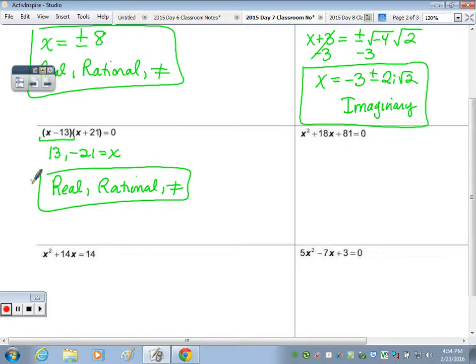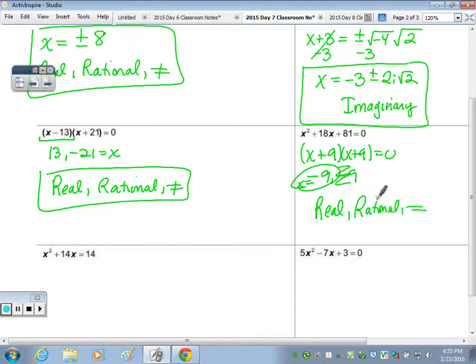The expression here, I can factor. The factors that multiply to 81 and add to 18 are the same, 9 and 9. So my answers are -9, -9. But I don't write it twice. It's just x = -9. So these roots, or this root, this is actually our double root, is real, 9 is rational, and they're equal. They're the same number. We just don't write it twice.